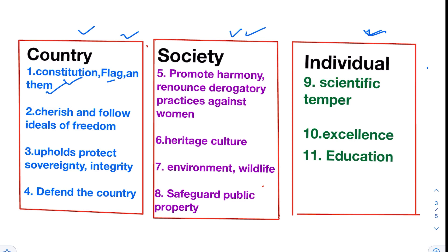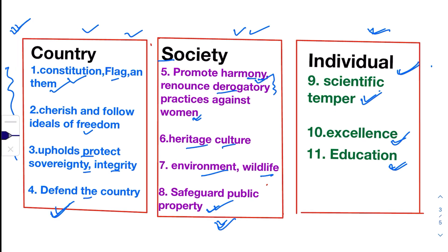Cherish and follow the ideals of the freedom struggle, uphold and protect sovereignty and integrity, and defend the country and render national service when called upon to do so. These duties are of great importance because they signify that our country is a sovereign country. As members of a sovereign country, to protect its sovereignty and integrity, we need to follow the Constitution and the moral ideals of the freedom struggle so that the country does not fall into anarchy. As citizens, we are responsible to maintain the freedom and integrity of the country — that is why we are required to defend it and render national service. These four duties are of great significance for a country as a whole.